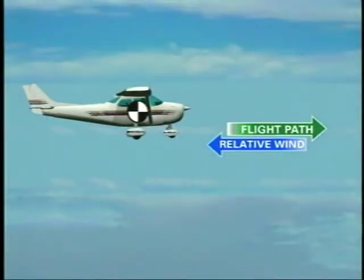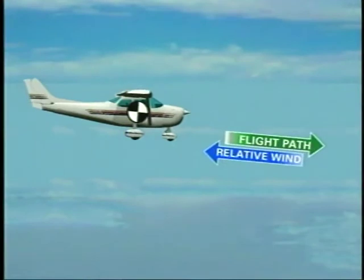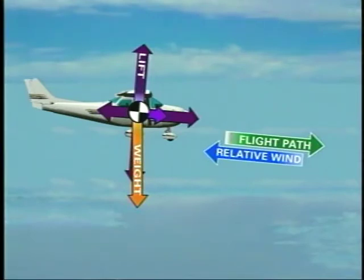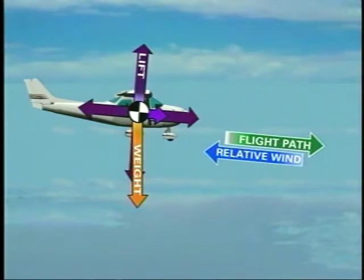In stabilized descending flight, like a stabilized climb, the aerodynamic forces acting on the airplane are in equilibrium. However, during a descent, one component of weight acts perpendicular to the flight path opposing lift, while the other acts forward along the flight path, adding to thrust and opposing drag. If the power setting is unchanged, airspeed increases as the nose is lowered in a descent, and a corresponding increase in parasite drag works to balance the force of weight. When airspeed stabilizes, aerodynamic forces are again in equilibrium.